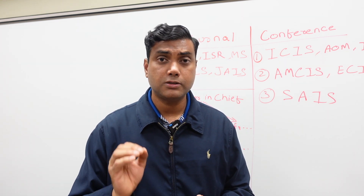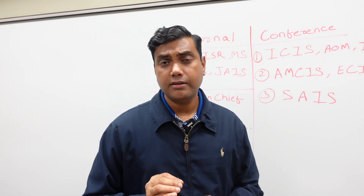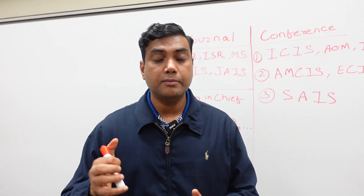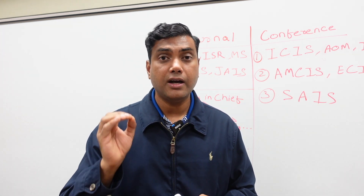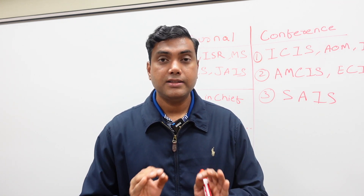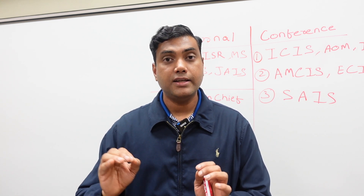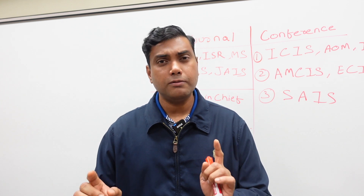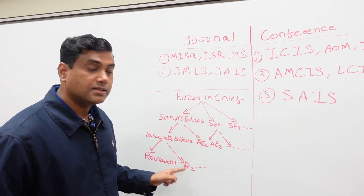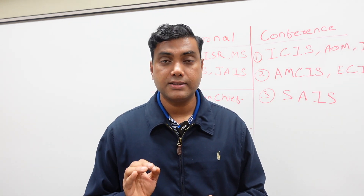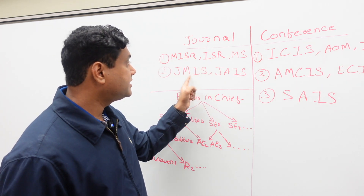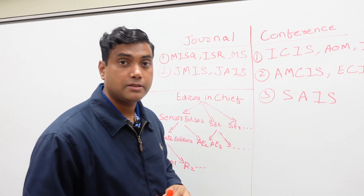If the editor-in-chief decides the paper looks good and should be given an opportunity in the review process, then based on the nature of the paper — its methodology or topic — the editor-in-chief picks a senior editor who does similar work. The senior editor then appoints an associate editor, and collectively they pick the reviewers, who are researchers in the same field. The standard is one senior editor, one associate editor, and three reviewers. I myself have served as a reviewer for MISQ, ISR, and JMIS.